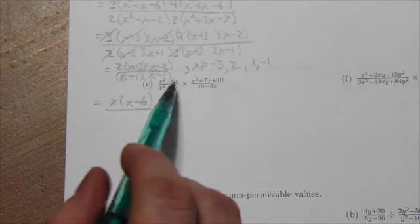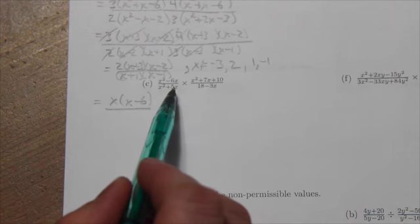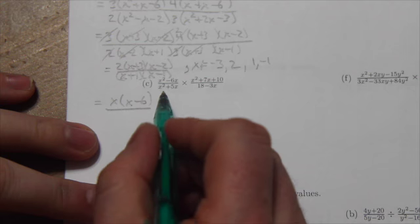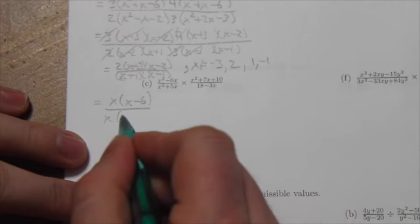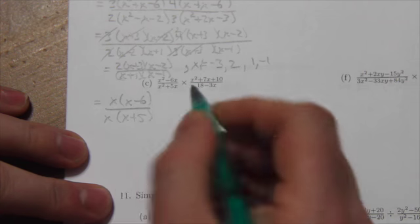And don't try the trinomial factoring here because there's only two terms. So just take out what's common. Same thing down here. There's only two terms, so just take out what's common there. That'll become x plus 5 times x there.